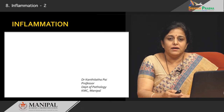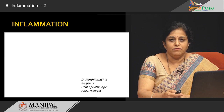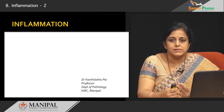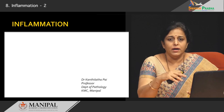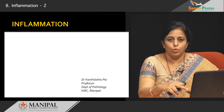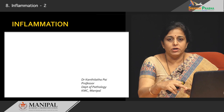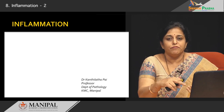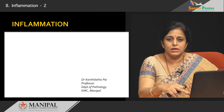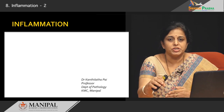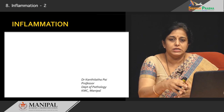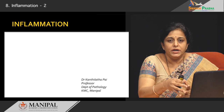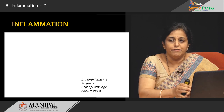Good afternoon, dear students. In the last class, we learnt about the cellular events that happen in inflammation — the sequential steps that happen before a leukocyte arrives at the site of inflammation: margination, rolling, adhesion, transmigration, chemotaxis, and finally phagocytosis. We learnt that the leukocytes arrive at the site of inflammation, engulf the bacteria or any injurious agent, and kill them. So, we will learn in a bit more detail about this process of phagocytosis.